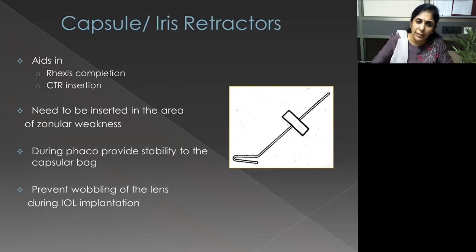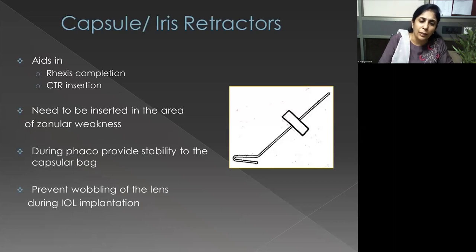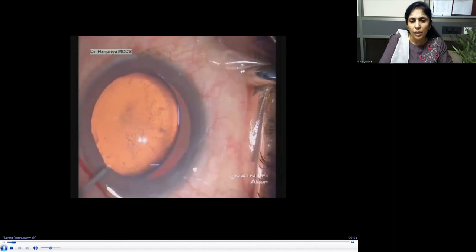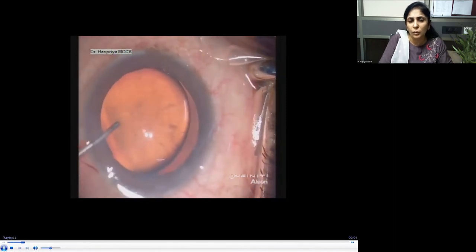The second important aspect is using capsule retractors. I use iris retractors — specifically Grish-Barhour hooks — to support the capsular bag. I consider these even more important than the CTR at the start of the case, because they help with rhexis completion, CTR insertion, and during phacoemulsification. These hooks stay until the IOL is placed in the bag, because even with a CTR in place the capsular bag can still be wobbly.